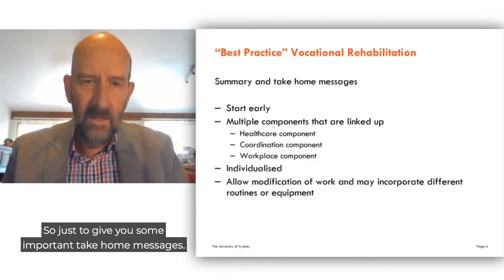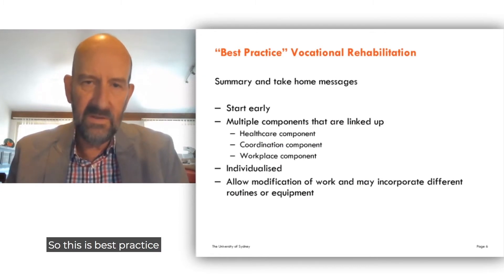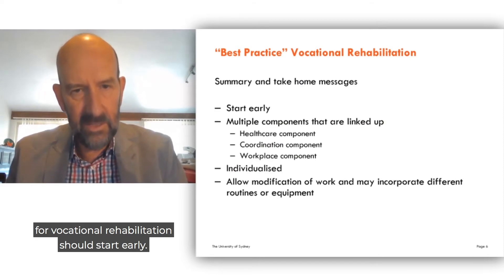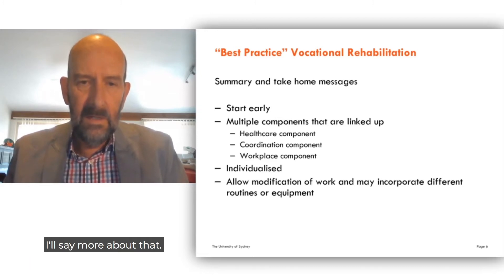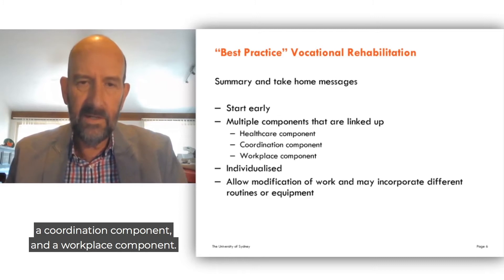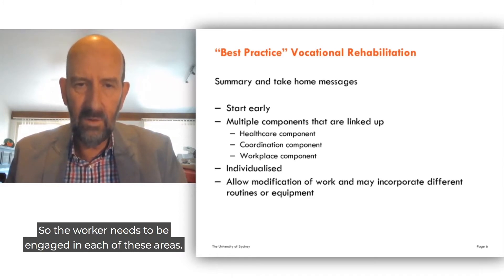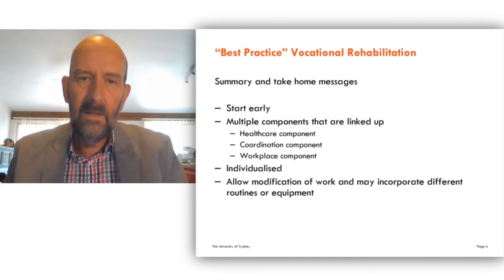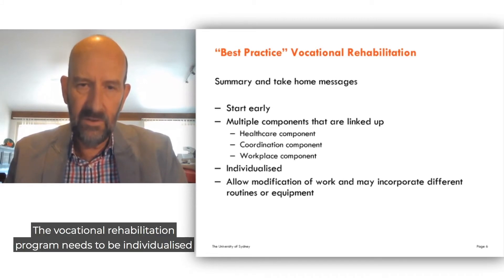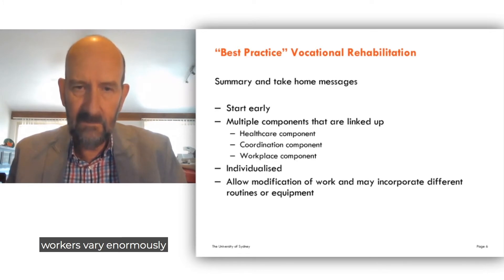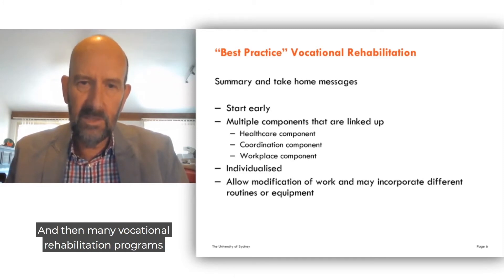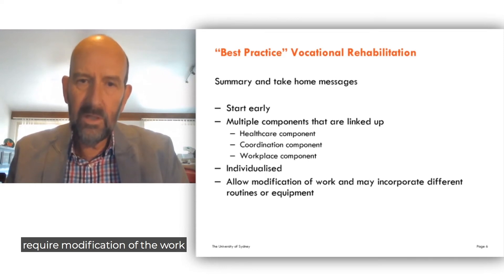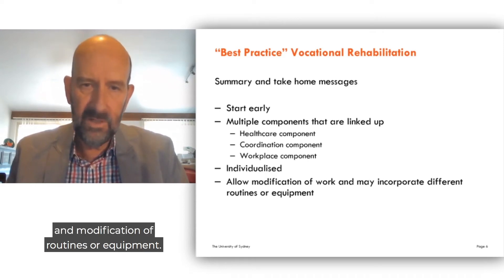Some important take-home messages: best practice for vocational rehabilitation should start early. There should be multiple components that are linked up — broadly, there's a healthcare component, a coordination component, and a workplace component. The worker needs to be engaged in each of these areas. The vocational rehabilitation program needs to be individualized, as workers vary enormously and so do workplaces. Many vocational rehabilitation programs require modification of the work and modification of routines or equipment.